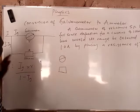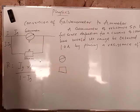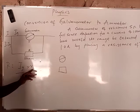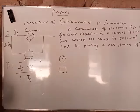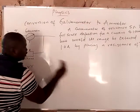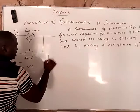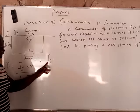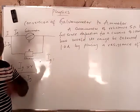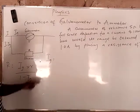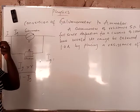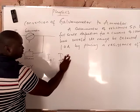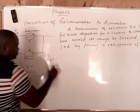All you need to do is know this formula. R, which is the shunt resistance, is equal to IG times small r, all over I minus IG. I want you to know what this means — note it down in your booklet immediately. IG is the current of the galvanometer.